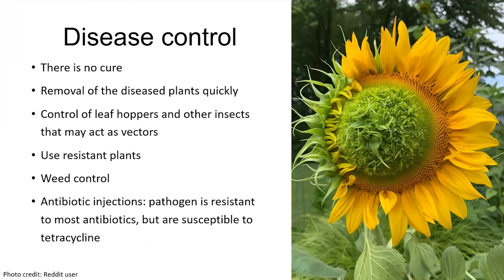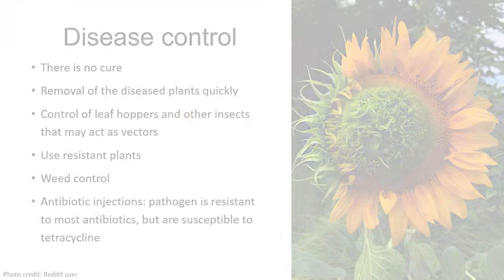There are also chemical methods — specifically antibiotic injection. As mentioned, phytoplasma is susceptible to tetracycline. If you have a tree infected by phytoplasma, antibiotic injection can be used. However, for shrubs or plants like those with aster yellows, the antibiotic injection method may be difficult to apply.